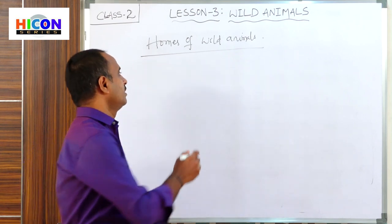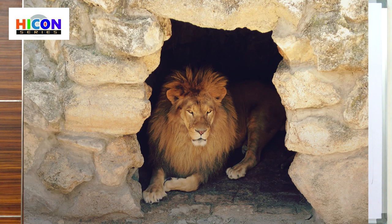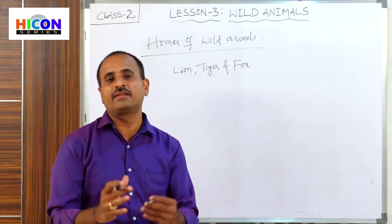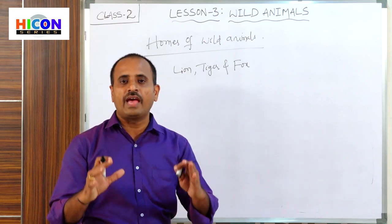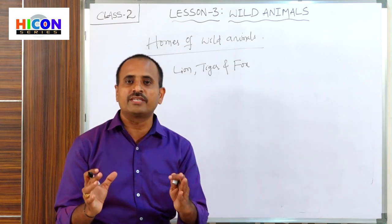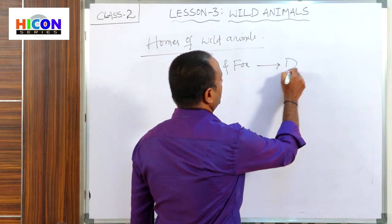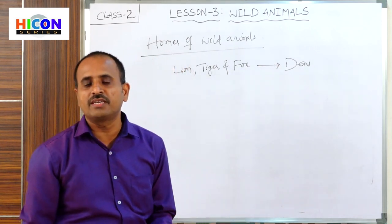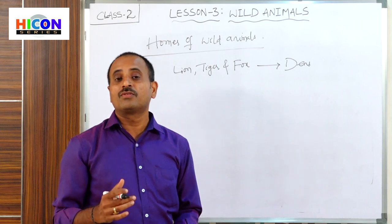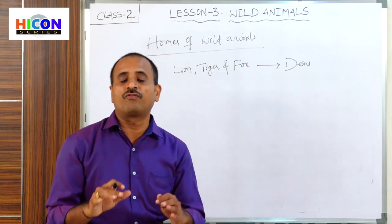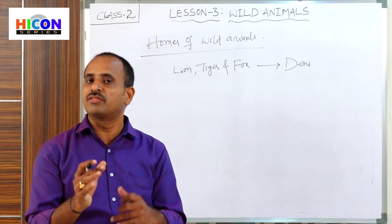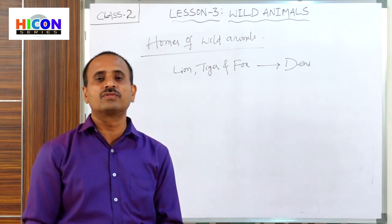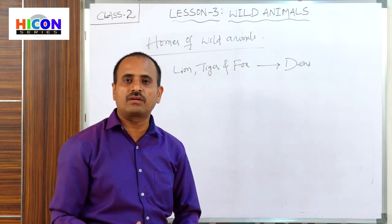For example, tiger, lion, and fox live in a den. They search for a cave in the mountains and make those caves their houses. The caves formed naturally in the mountains that serve as homes for lions, tigers, and foxes are called dens.